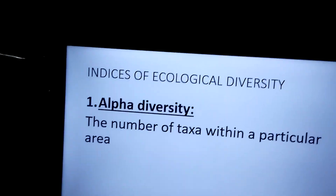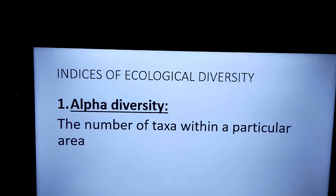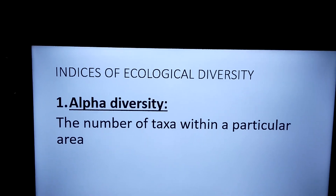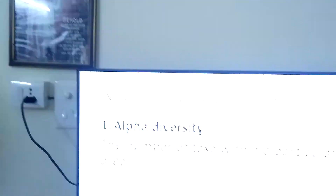There are three indices of ecological diversity. The first one is alpha diversity. Alpha diversity is the number of taxa or species within a particular area — a particular area is taken and the number of species within it is counted. That is called alpha diversity.